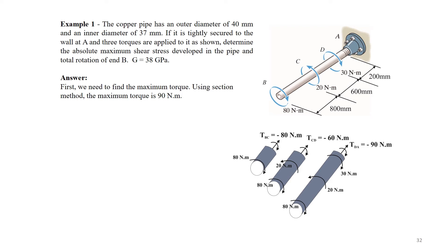Therefore, the maximum shear stress in the pipe is given tau max equals T max times C by J. The total rotation of end B can be calculated as follows.